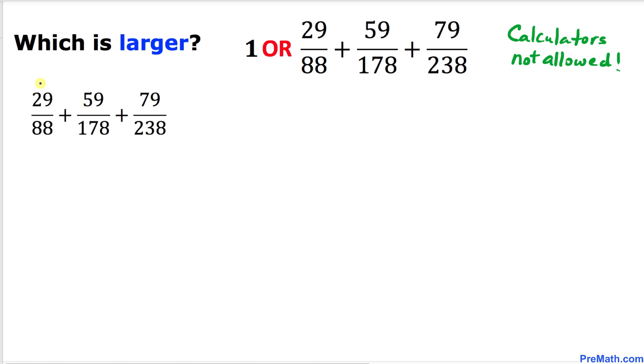Let's focus on this very first fraction, 29 divided by 88. I can write this one as 29 over 87. Likewise, the second fraction I am going to write as 59 divided by one less—I'm going to write down 177. Finally, this third fraction I can write as 79 divided by one less again in the denominator, so I can write 237.